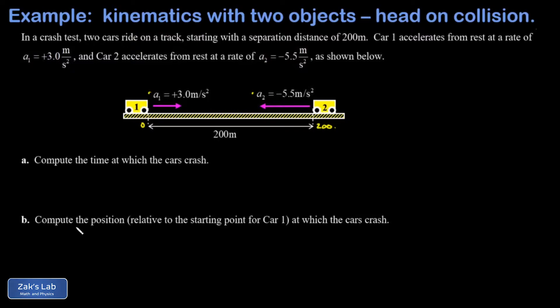In part a, I want to get the time at which these cars run into each other. The key to these problems is to get a position versus time function written down for each of these cars, and that comes from our basic kinematics formula: x equals x naught plus v naught t plus one half a t squared. That's describing the position of an object as a function of time, so I write down my position function for car number one.